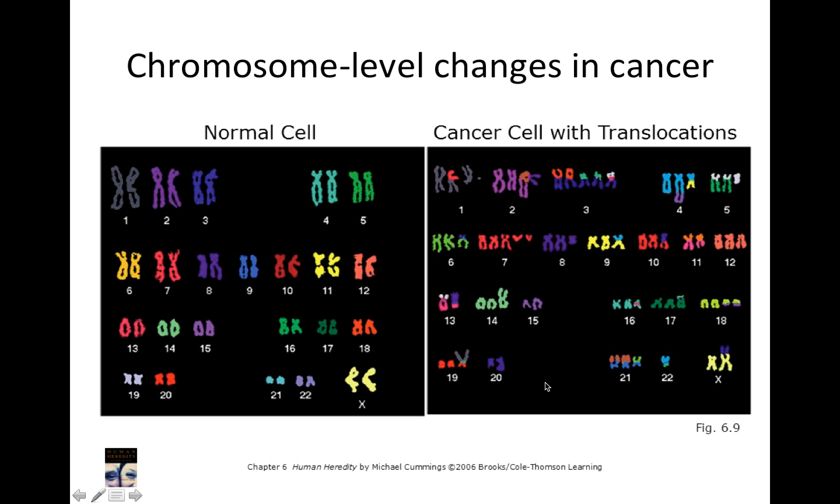And then over here, we see our cancerous cell. So we see a bunch of things. Chromosome 1 here, we've got three copies. And chromosome 15, we've lost half of a copy. Chromosome 20, it looks like we've lost half of a copy. Chromosome 22, we've lost one copy.